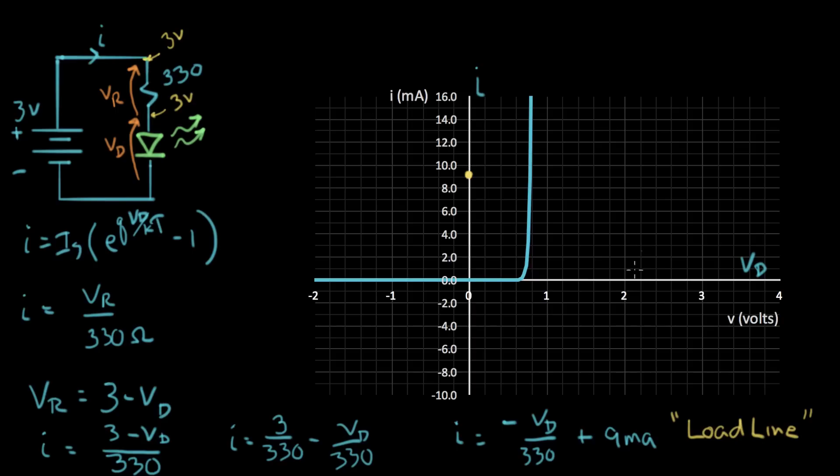So let's go over and put that point on our line. So when I is zero, V is three volts. So there's another point on the line. And now we have two points and we can draw a line between them, like that. And what we've drawn is the load line for this 330 ohm resistor.